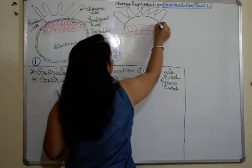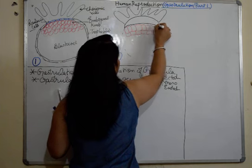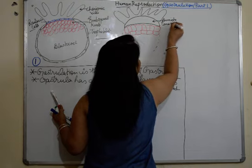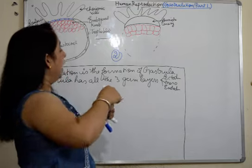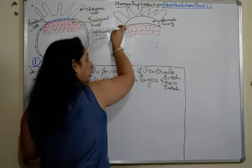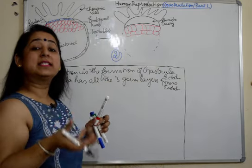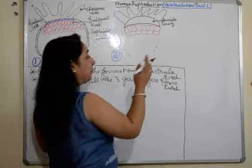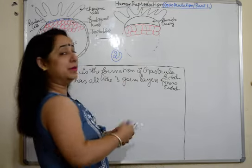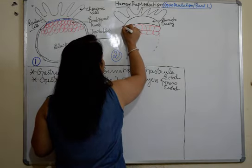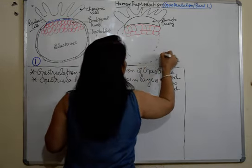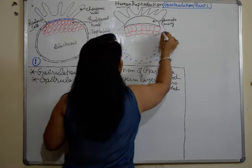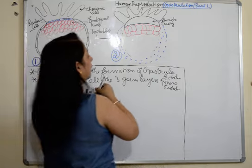Where the Rauber cells were present and have now disappeared, a cavity forms — this cavity is called the amniotic cavity. In the future, this amniotic cavity will expand to cover the whole structure, enclosing the embryo, and will be filled with amniotic fluid inside which the embryo will develop.